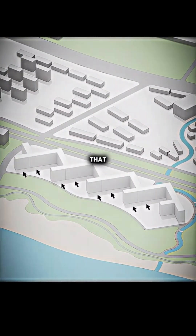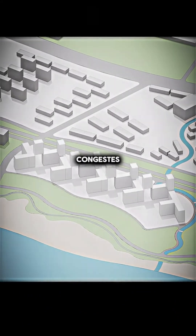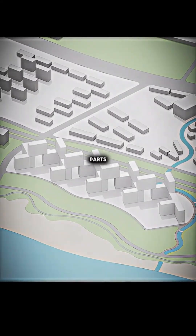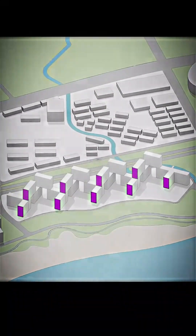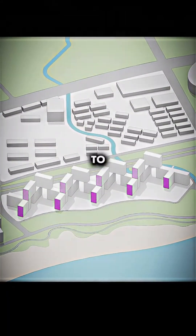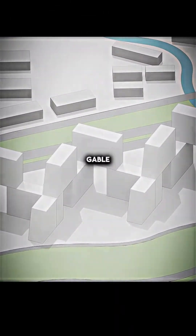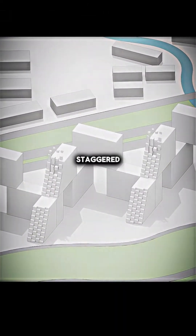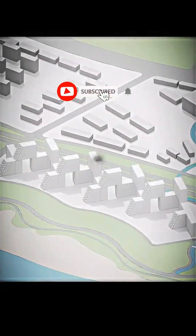Noticing that the elongated structure congests the urban interface, you carve away parts of the house and relocate them to the rooftop. To avoid wasting the unsightly gable-end views, you can add staggered, perforated terraces on the gable walls.